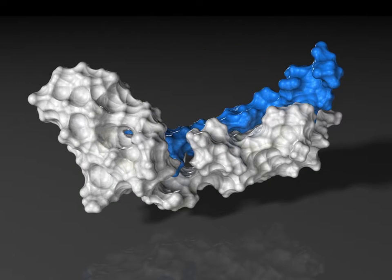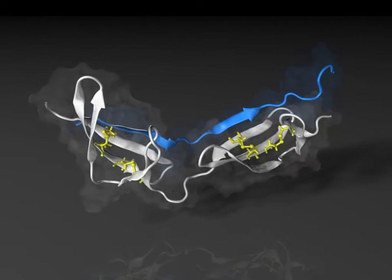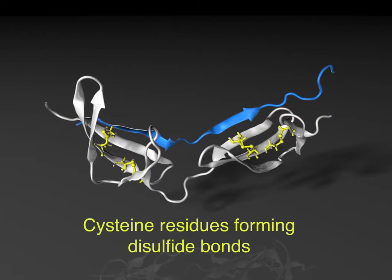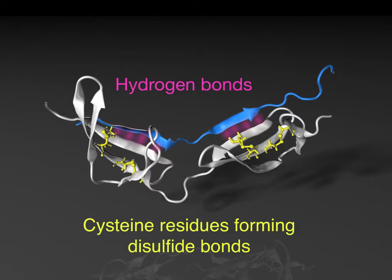The two fibronectin domains contain cysteine residues that form intramolecular disulfide bonds, and the bacterial adhesin binds to fibronectin via hydrogen bonds.